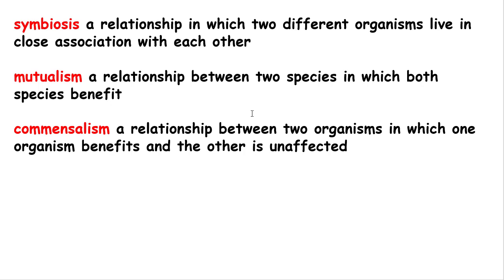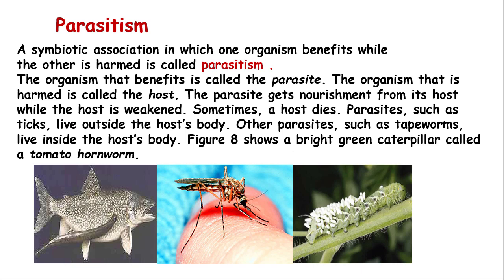To review: symbiosis is a relationship in which two different organisms live in close association. Mutualism is a relationship between two species in which both benefit. Commensalism is a relationship between two organisms in which one benefits and the other is unaffected — the small fish benefits from the large fish, but the large fish is not affected.